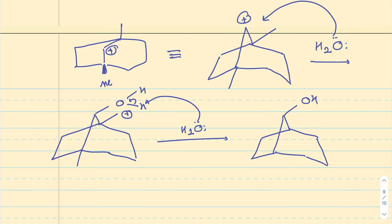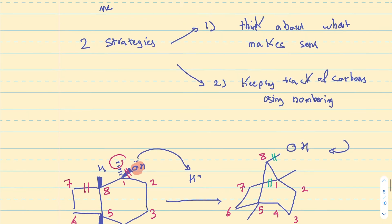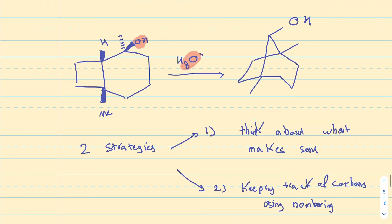All right. Now, this is how I get to the product. Let me just basically briefly recap what I did. So, first of all, I am given this reaction, and I have two strategies for coming up with a mechanism for this reaction, and I use these two strategies both at the same time. All right. I want to think about what makes sense to happen under these given conditions, and I want to keep track of my carbons and try to figure out which bonds are being broken and which bonds are being made.